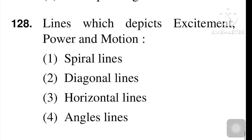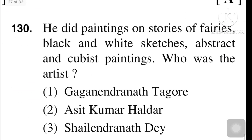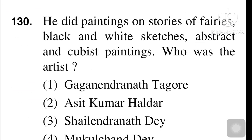Next question: the line which depicts excitement, power, and motion — spiral lines, diagonal line, horizontal line, or angular line? Option number one, spiral lines, is the answer. Next question: in 1971 he made 30 paintings on the story of Mahabharata — MF Husain is the right answer. Next question: he did paintings on stories of fairies, black and white sketches, abstract and cubist paintings — who was the artist? Gaganendranath Tagore is the right answer, option number one.